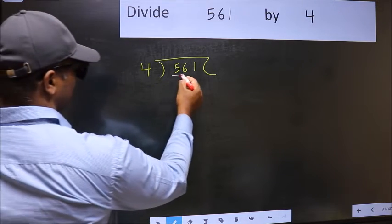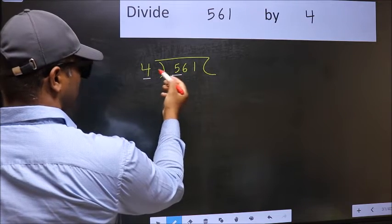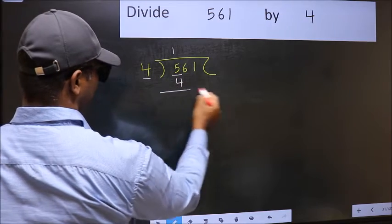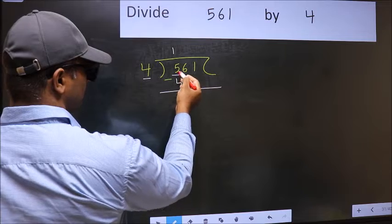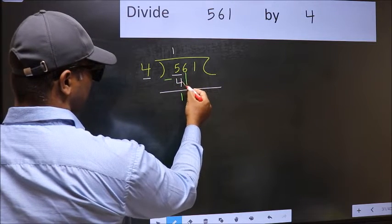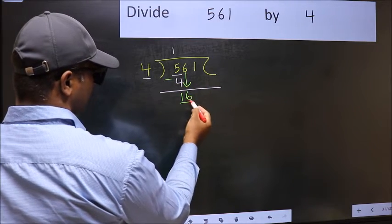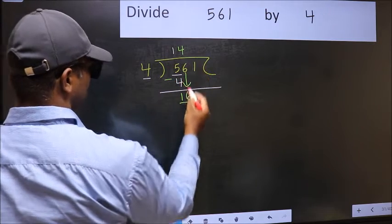Here we have 5 and here 4. A number close to 5 in 4 table is 4 once 4. Now you should subtract. 5 minus 4, 1. After this, bring down the beside number. So 6 down. Now 16. When do we get 16 in 4 table? 4 fours 16.